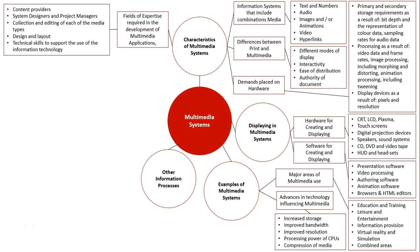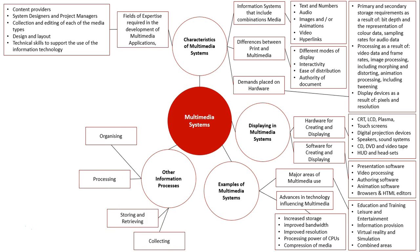From here we look at the other information processes covered in this unit — collecting, storing and retrieving, processing, and organizing. For collecting, we look at how we actually collect text and numbers in digital format, which is what we do in most information systems. But multimedia goes a step further in that we're also collecting audio, video, and images — and not just in digital form. Sometimes we get them in analog form, such as using an old school recorder and then converting it into digital form, or with audio playing a guitar and connecting it to a device that turns the analog signal into a digitized version. Images may also need to be scanned before being put into a system so that they can be digitized — these are examples of methods of digitizing analog data into a digital form.